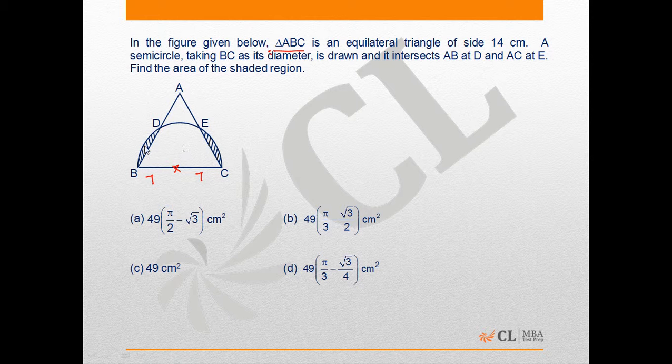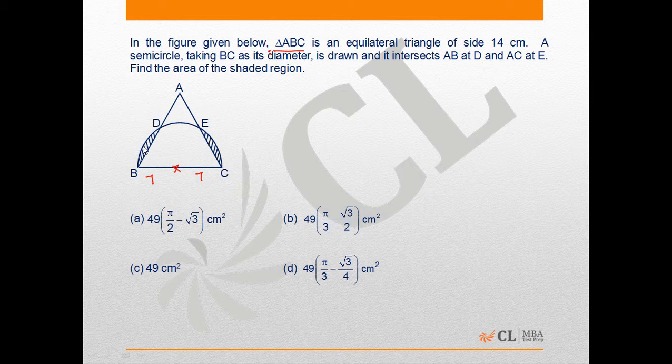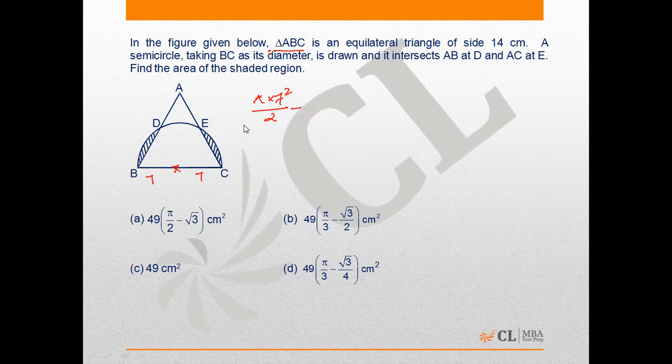Can we say the area of the shaded region is area of the semicircle, that is π × 7² ÷ 2, minus area of this blank region within the shaded circle, which is B, D, E, C within the semicircle?